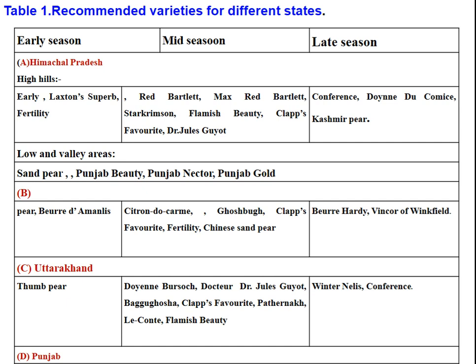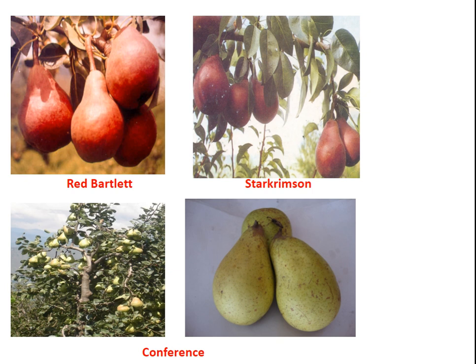This is the chart for the varieties of pear for different states, grouped as early season, mid-season, and late season varieties. These are the images for the different varieties of pear: Red Bartlett, Starkrimson, and Conference.